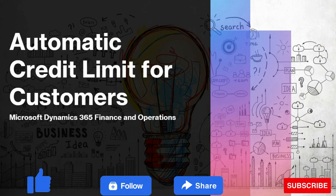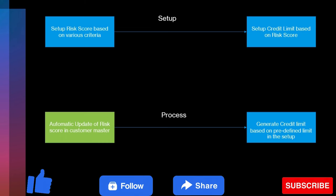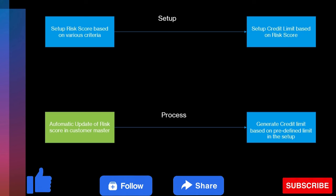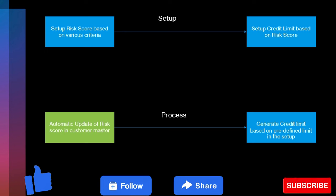Before I jump into the system demo, I will talk about the concept — how this automation is done in Microsoft Dynamics Finance and Operations. For any automation in any business process, we always need to have a history and a structured way of working, and some setup based on that structural way. I have bifurcated two aspects: setup and process. In the setup, the first thing we need to configure is to update some risk scores based on various criteria.